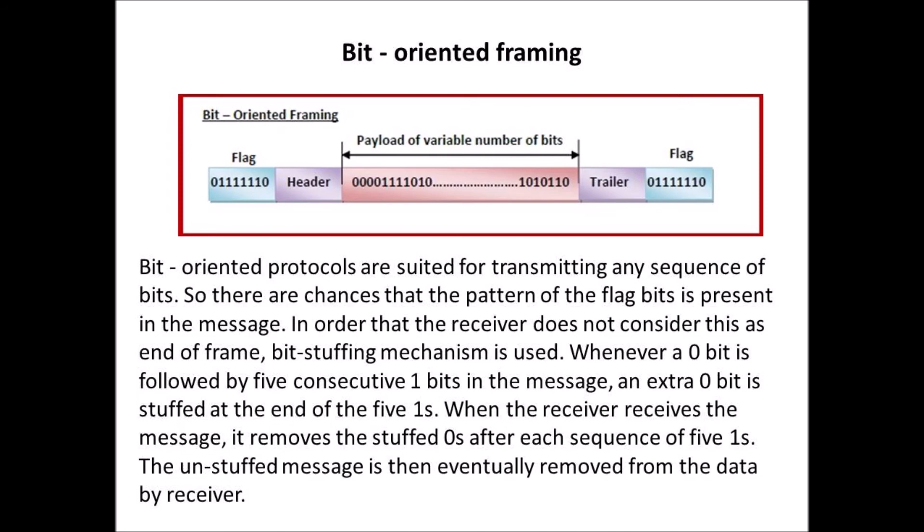When the receiver receives the message, it removes the stuffed zeroes after each sequence of five ones. The unstuffed message is then recovered from the data by the receiver. That is the flag bit pattern and the bit stuffing mechanism.